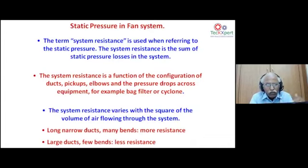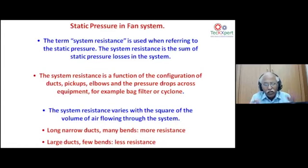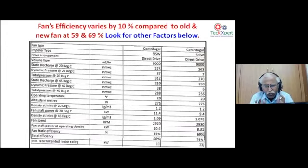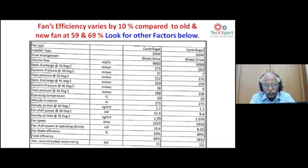System resistance must be maintained to the commissioned norms — what was the static pressure at commissioning vs. after three or five years must be checked routinely. A typical blower spec from a reputed manufacturer shows an existing blower at 59% efficiency and a new improved blower at 69%. The contributing factors to blower efficiency — static discharge at 20°C vs. 45°C — are all itemized in the table, demonstrating how multiple parameters together affect overall blower performance.